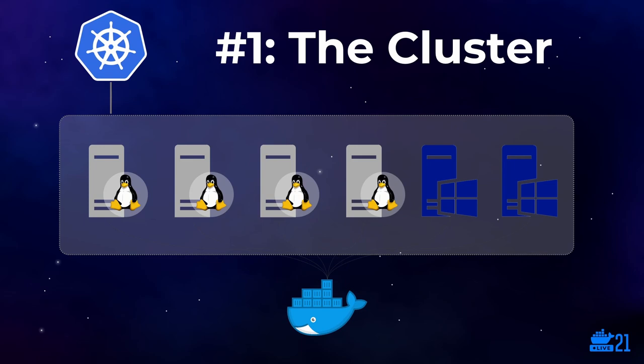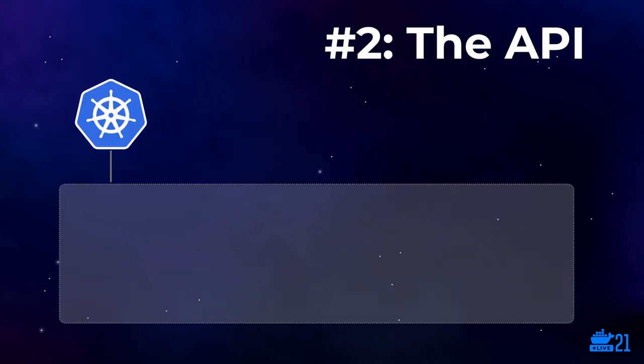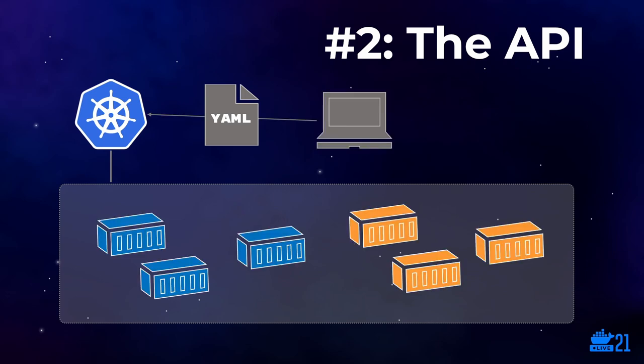The way you do that is the second big concept in Kubernetes, which is the API. Kubernetes has a really well-structured modeling language for you to describe your application, and you'll do that using YAML. When you're ready to deploy your application, you'll send all your YAML files up to the cluster and Kubernetes will work out which servers to run those containers on.